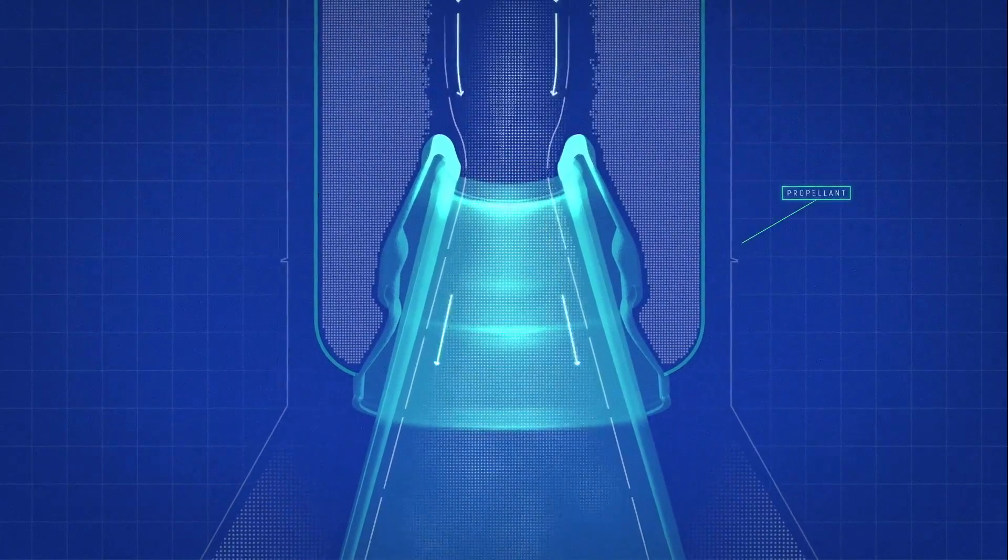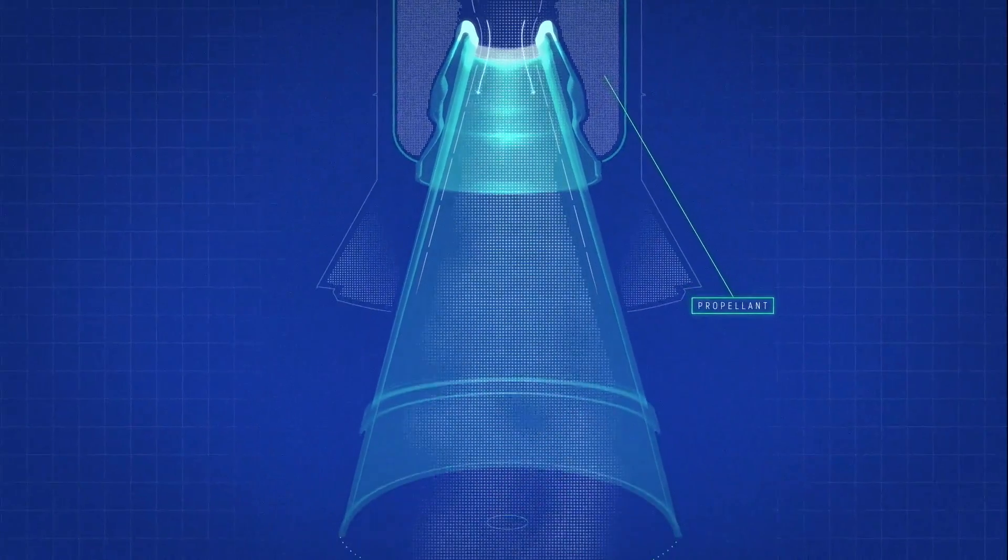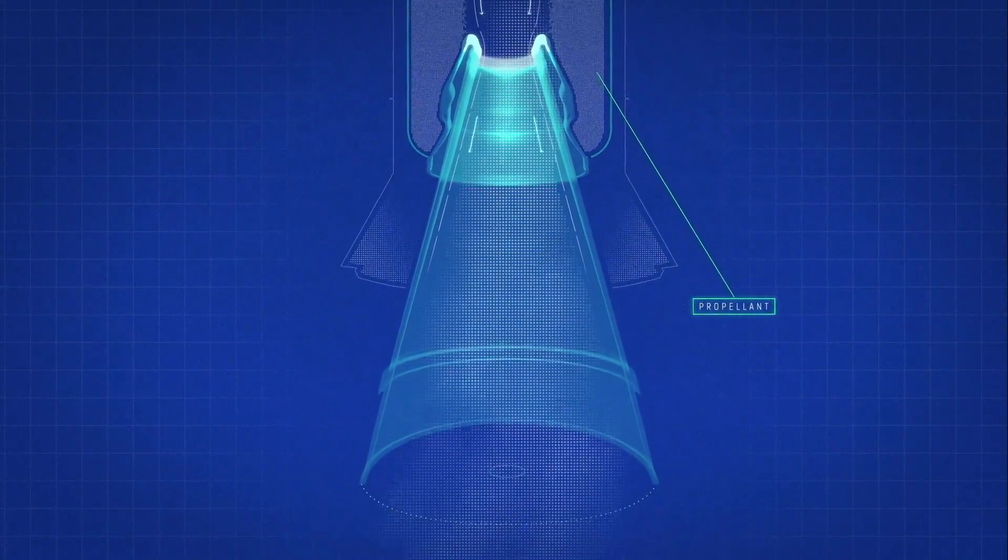The convergent section initiates the acceleration of the gas. The gas then arrives at the throat, which as it narrows increases the pressure of the gas.